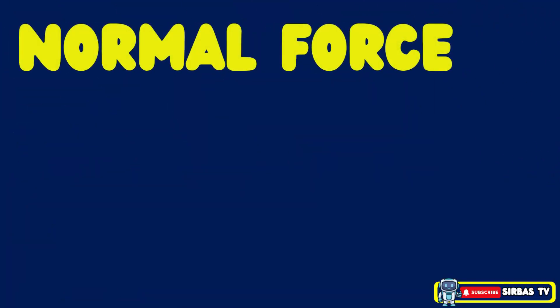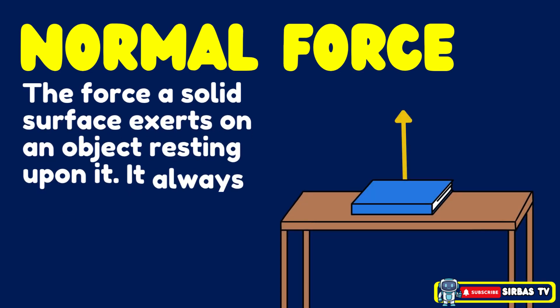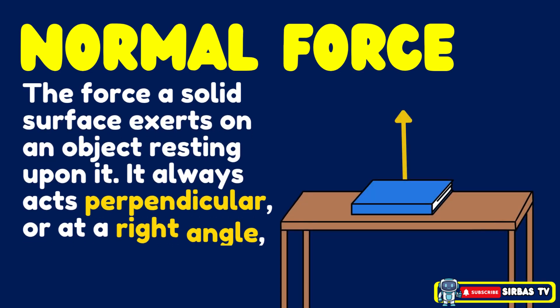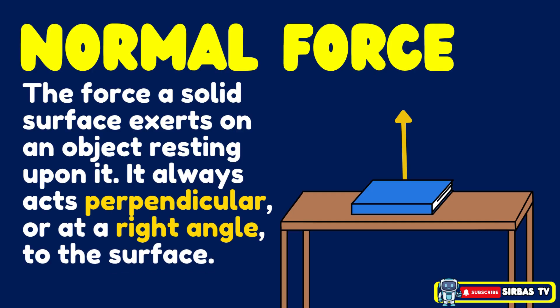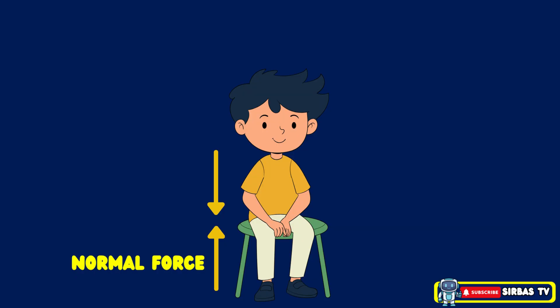Normal force is the force a solid surface exerts on an object resting upon it. It always acts perpendicular, or at a right angle, to the surface. It is what keeps objects from falling through the ground. When you sit on a chair, your body pushes down and the chair pushes back up with an equal force. That upward push is the normal force keeping you balanced and supported.